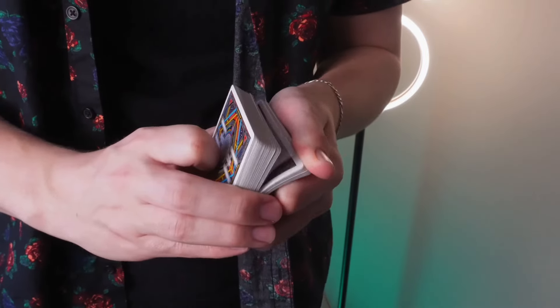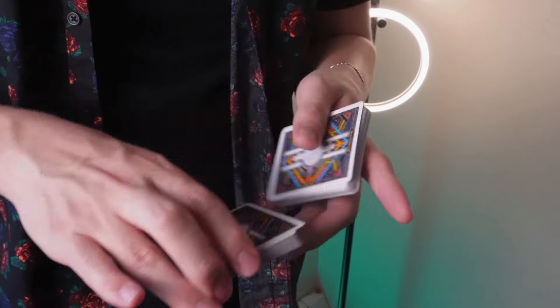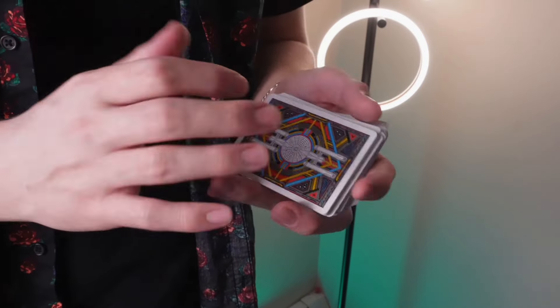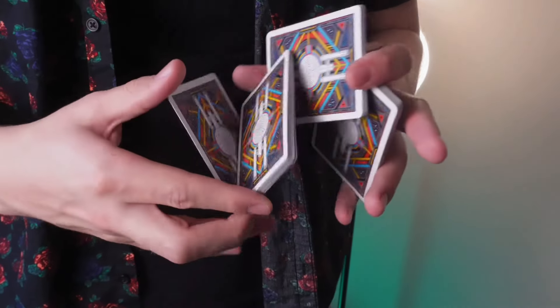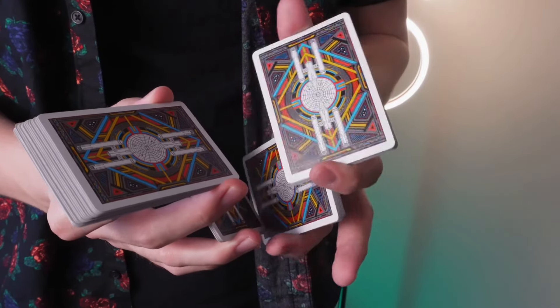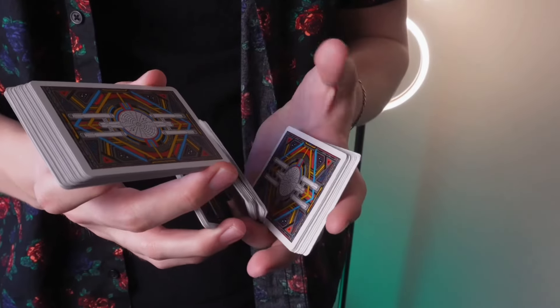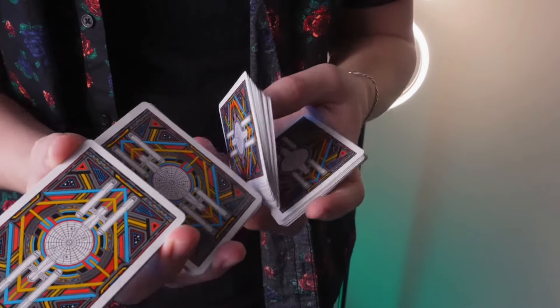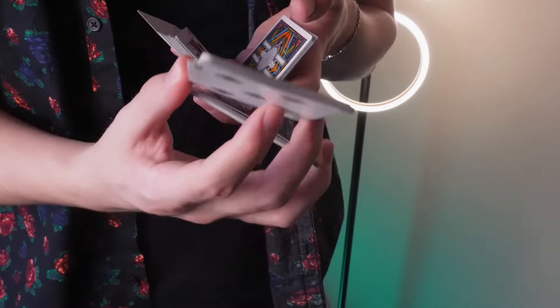The first variation we have here is this. So it's rather simple and it just feels really flowy and nice in the hands. So let's get into showing you how it's done. Again, I'm going to assume you know how Barlo 2 is done, so we're going to get into this position here, right where you swing that packet across.